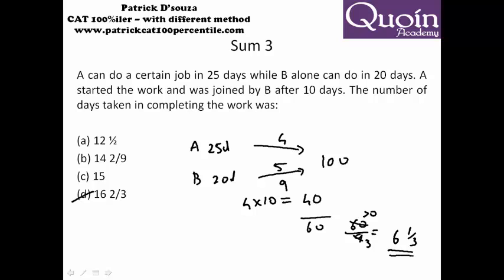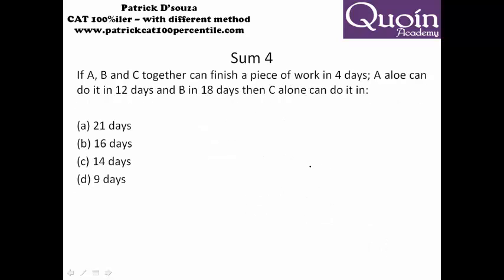Here A, B, and C can finish a piece of work in 4 days. A alone 12 days, B alone 18 days. So you can take LCM of these three: 4, 12, and 18, which comes to 36.